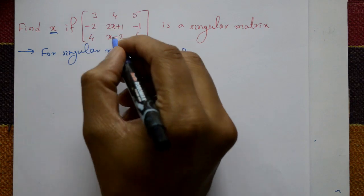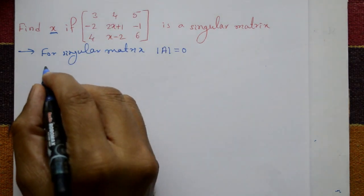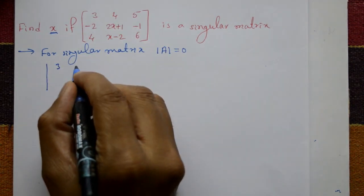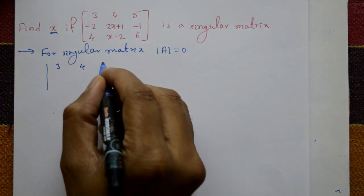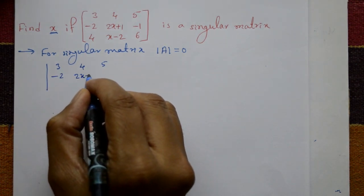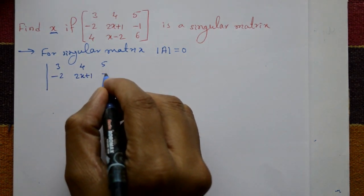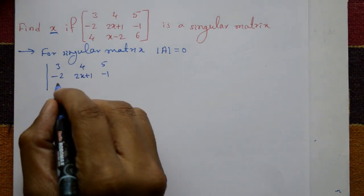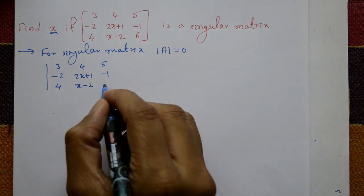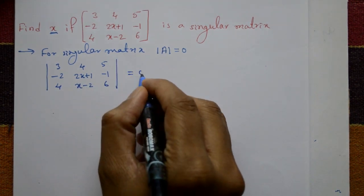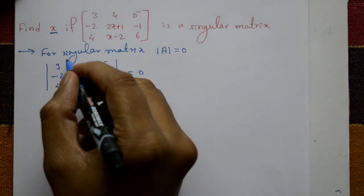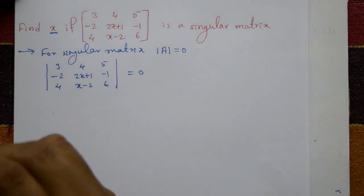Consider the determinant written as: 3, 4, 5; minus 2, 2x plus 1, minus 1; 4, x minus 2, 6 — that is equal to 0. Now expand this determinant.